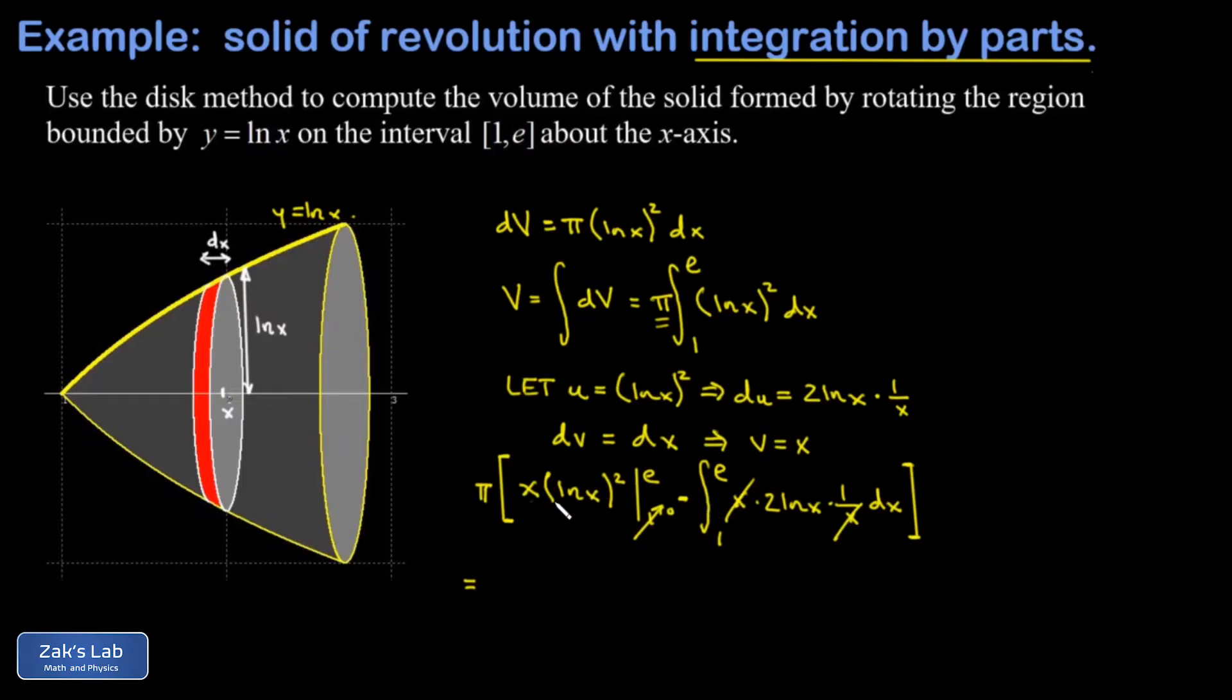When I replace x with e I just get an e. Then my leftover integral, I'll go ahead and pull a 2 out in front of it, so I have minus 2 times the integral from 1 to e of natural log x dx.